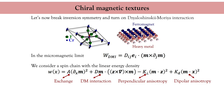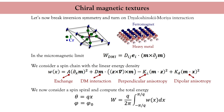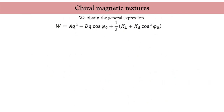The form of the Dzyaloshinskii-Moriya interaction chosen here is appropriate to interfaces normal to the z-axis, so this energy typically models a perpendicularly magnetized spin chain close to an interface. To analyze the influence of the Dzyaloshinskii-Moriya interaction, we consider a spin spiral and compute its total energy. The polar angle is simply proportional to the position x, and the azimuthal angle is assumed to be constant.